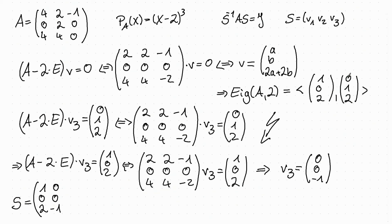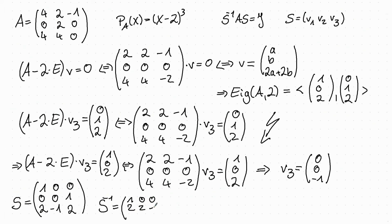Next, we write the last eigenvector (0, 1, 2). We then compute the inverse matrix S to the minus 1, which is 1, 0, 0, 2, 2, minus 1, 0, 1, 0. We can do that for example with the Gauss algorithm.